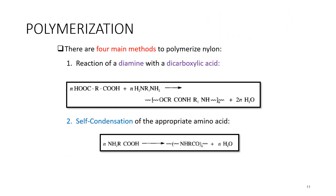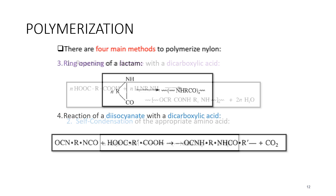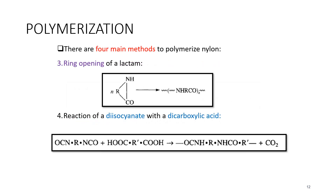During the polymerization of polyamide, there are four main methods. First, reaction of diamine with dicarboxylic acid. Second, self-condensation of the appropriate amino acid. Third, ring opening of a lactam. And fourth, reaction of diisocyanate with dicarboxylic acid.